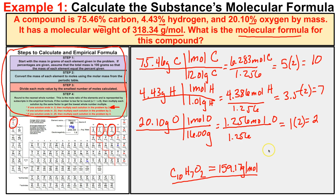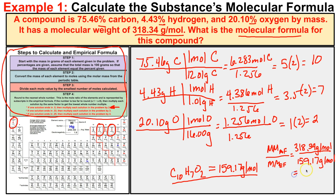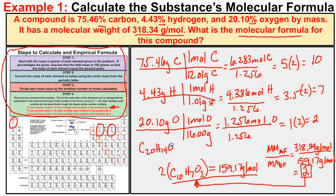In this last step, we take the molar mass of the molecular formula and divide it by the molar mass of the empirical formula. So 318.34 grams per mole divided by 159.17 grams per mole gives us the magic number of 2. We then distribute that 2 to every single subscript in the empirical formula, and we end up with our final answer: the molecular formula C20H14O4.